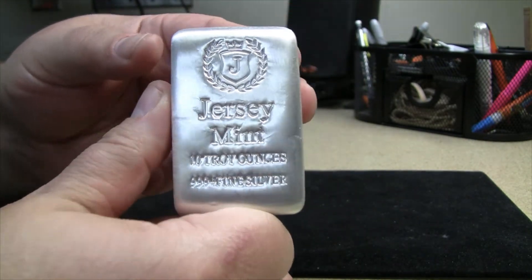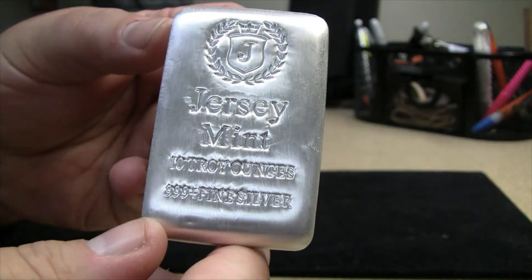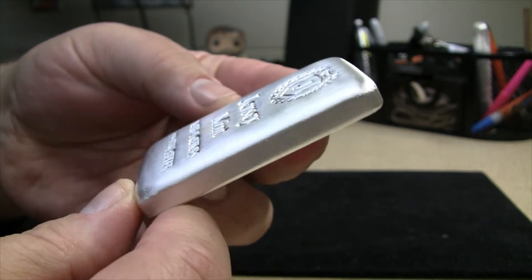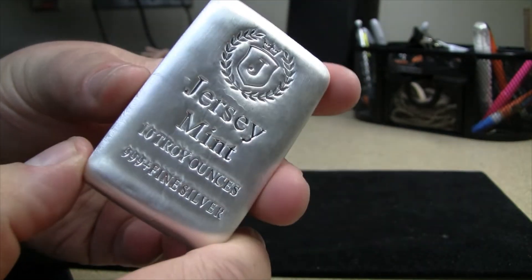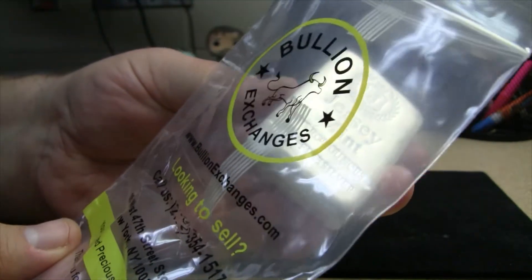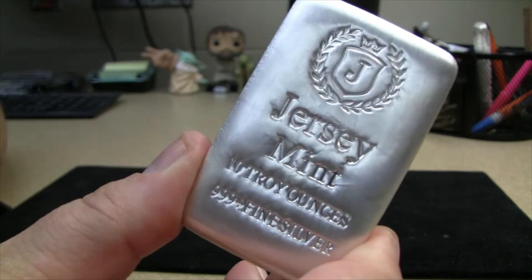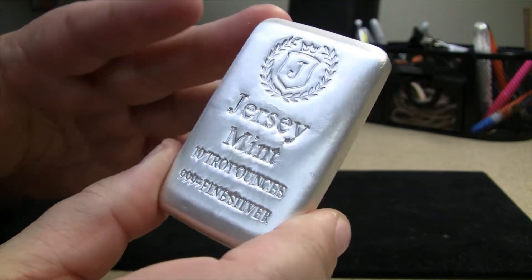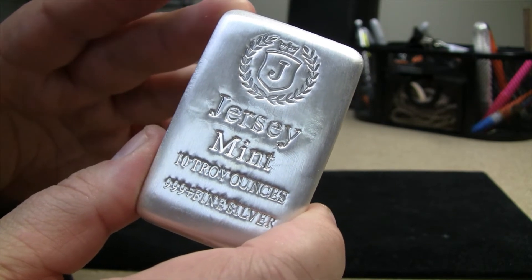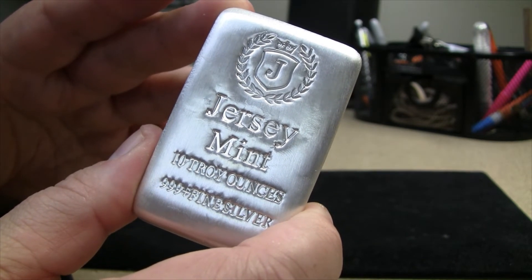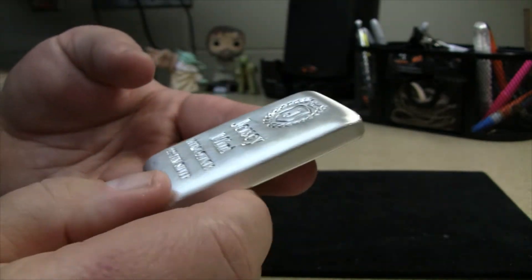It just so happens that at the time that I purchased this, it was the cheapest 10 ounce silver bar that I could get when I did a narrowing search on eBay. I'm sure you saw the bag - I got this from Bullion Exchanges. A lot of times if I'm shopping for different things, I'll do like '10 ounce silver bar, buy it now, price lowest to highest' and I just start going and finding deals.